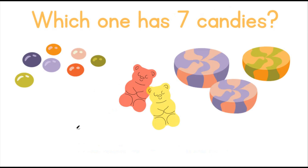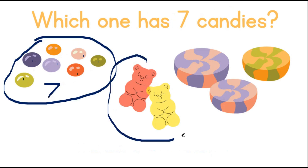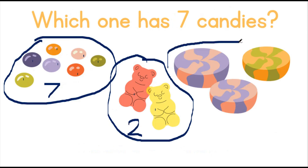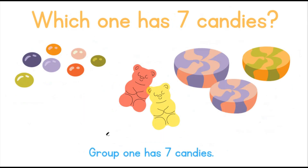Let's count. Group 1: 1, 2, 3, 4, 5, 6, 7. Group 1 has 7. Group 2 has 1, 2, 3. Group 3 has 1, 2, 3. That means group 1 has 7 candies.